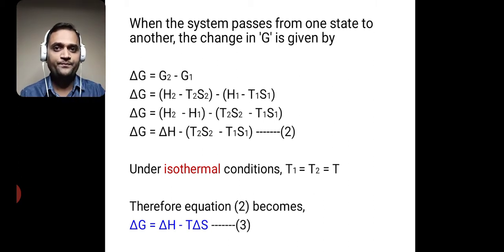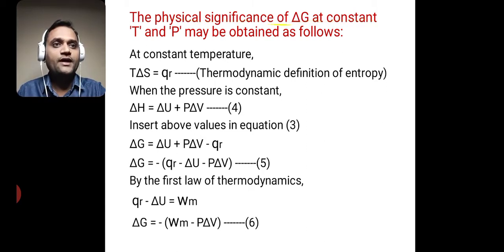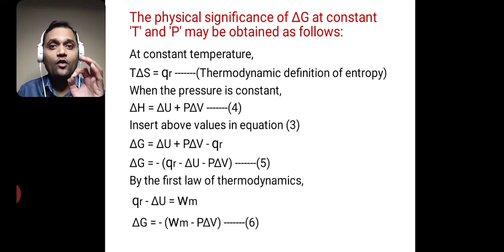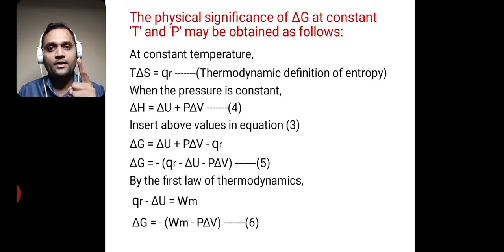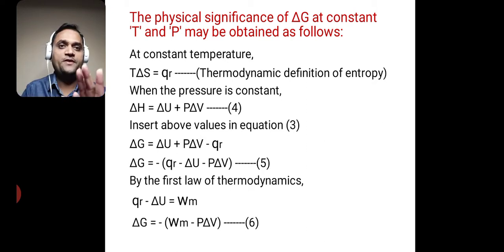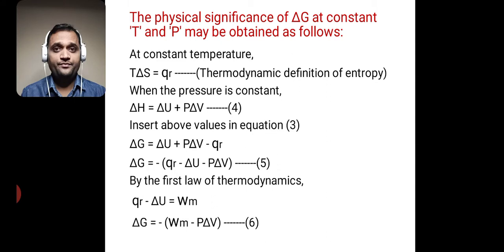We have to study the physical significance of delta G at constant temperature and constant pressure. At constant temperature, we know that T delta S is equal to Qr. This is nothing but the thermodynamic definition of entropy.